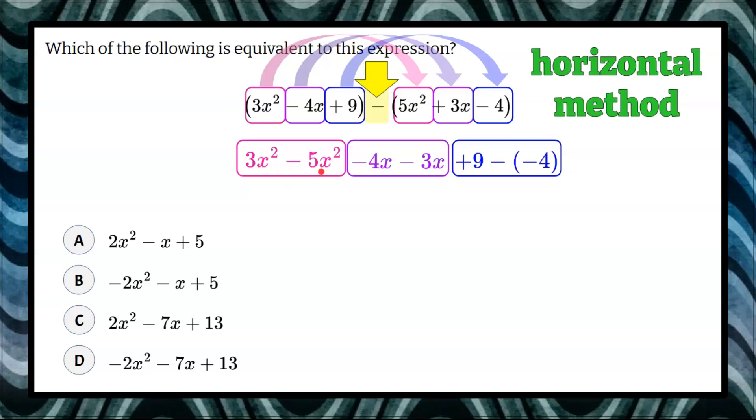3x² subtract 5x² is negative 2x². Negative 4x subtract 3x is negative 7x. And 9 subtract negative 4, add the opposite, so 9 add 4 is positive 13.